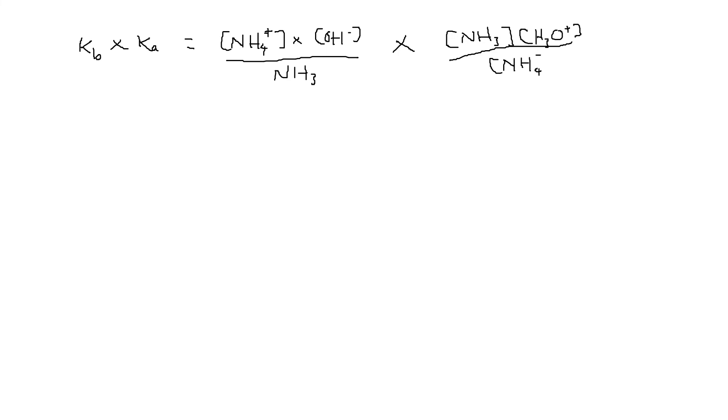When we multiply the two together, we can cancel some terms. That term cancels with this one and this term cancels with this one, so what we're then left with is Kb multiplied by Ka equals all we're left with here is OH-